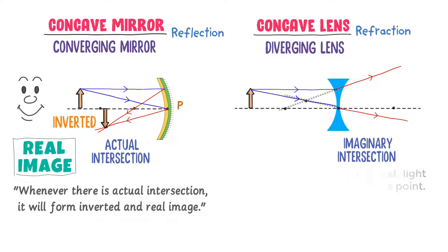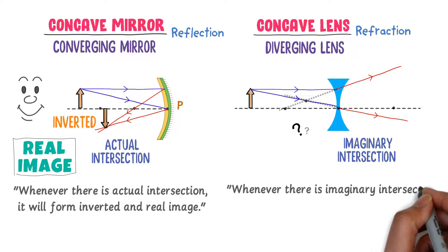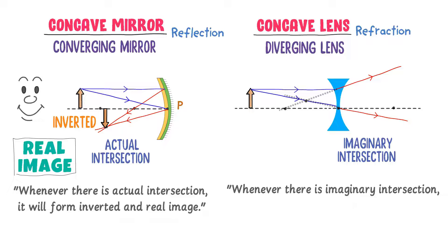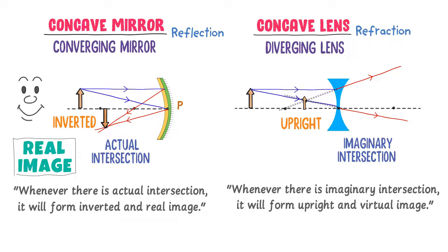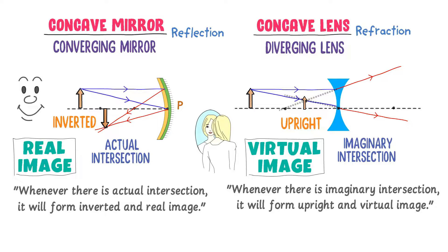Now listen carefully. What about the image of this object? Whenever there is imaginary intersection of light rays, it will form an upright and virtual image. So here an upright image is formed and this image is a virtual image. For example, in our daily life, the image formed by a plane mirror in your home is a virtual image.